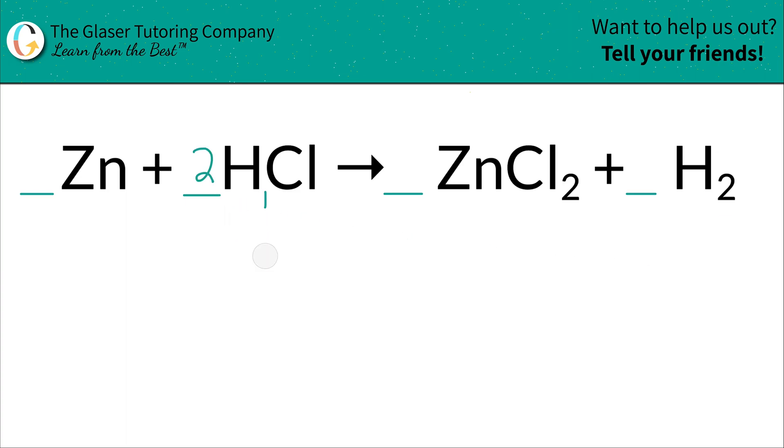So let's leave in the two. Now, chlorine is last. Chlorine is last. So chlorine only exists in the hydrochloric acid compound, and chlorine only exists in the zinc chloride compound. So I want to work with that. And plus, it's the last thing anyway, so we're going to work with it.